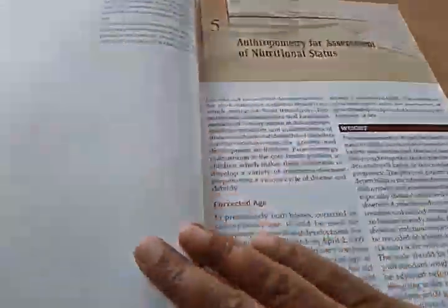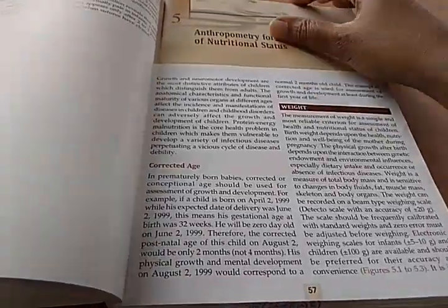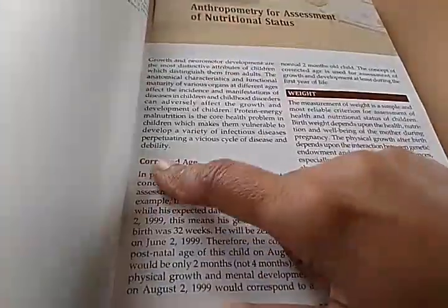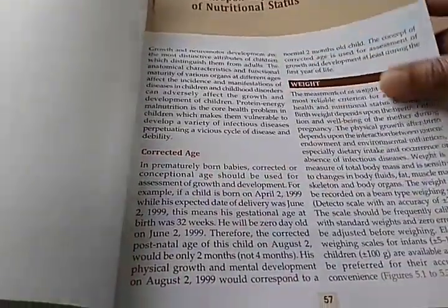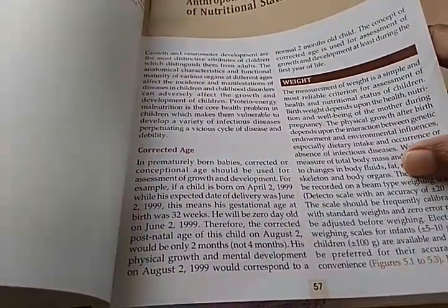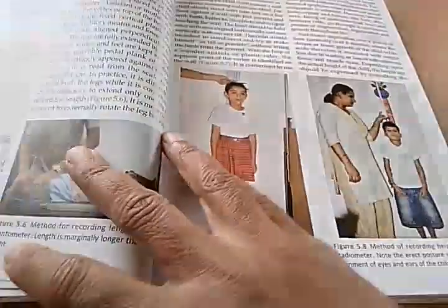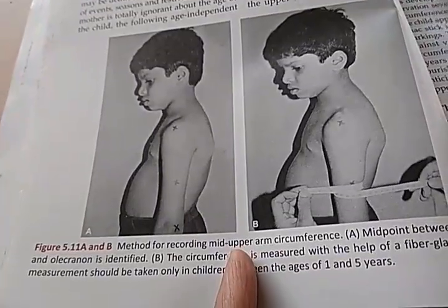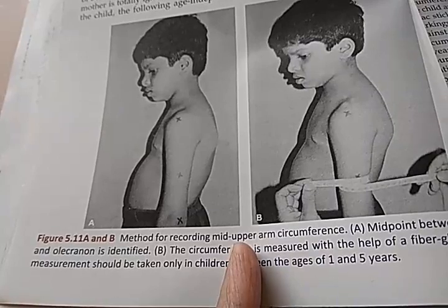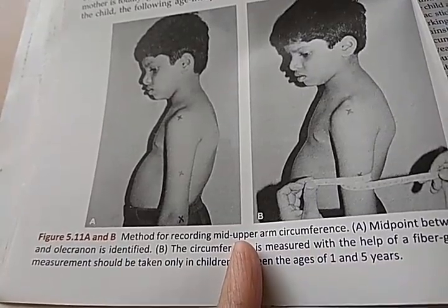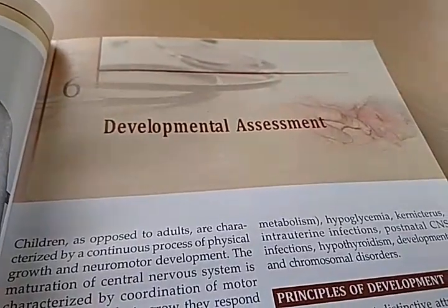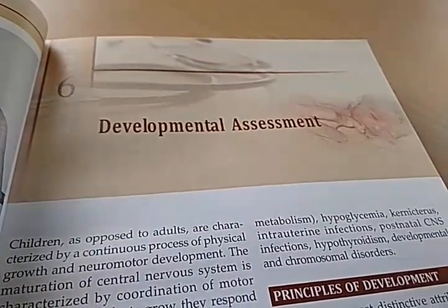Chapter 5 is on anthropometry for assessment of nutritional status. There is the concept of corrected age for prematurely born babies. You check weight, then height. They demonstrate measuring mid upper arm circumference. Chapter 6 is on developmental assessment.